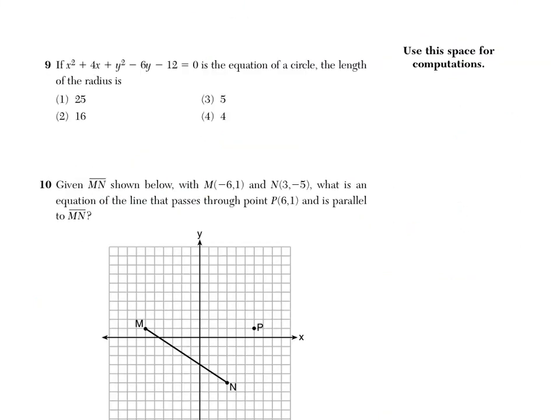In number nine it says that X squared plus 4X plus Y squared minus 6Y minus 12 equals zero is the equation of a circle. The length of the radius is blank. So we're asked to fill in the blank here. Now equation of a circle can be written in one of two ways. The first way is using this messy form, it's called the general form.